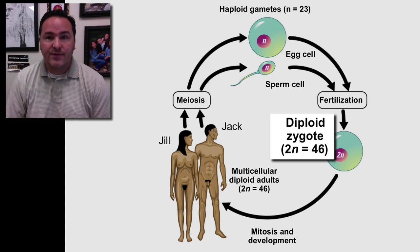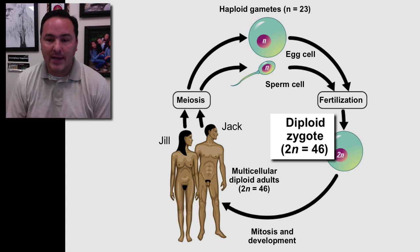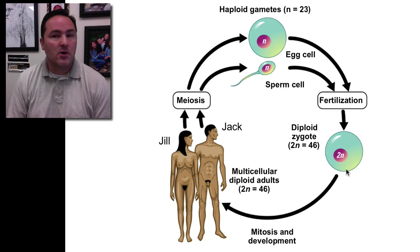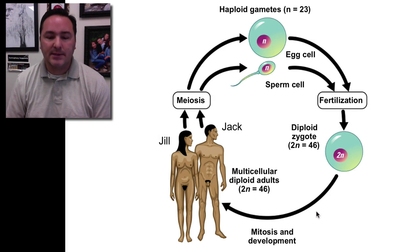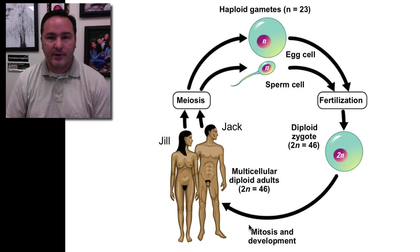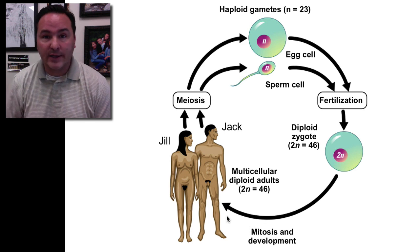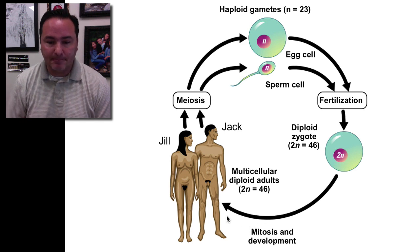Once an egg is fertilized by a sperm, it's called a zygote, and it now has 2N=46 again. Then that cell goes through mitosis and development and differentiation until eventually you form a full individual again.